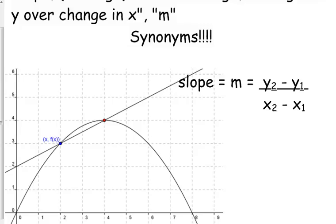So, more often than not, you will see this written as delta y over delta x. Delta representing, it's like a little triangle, representing the change in y over the change in x.